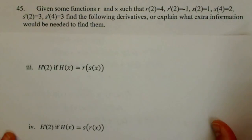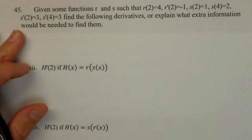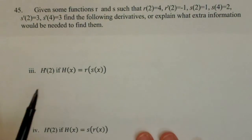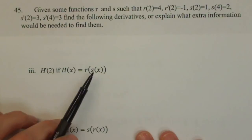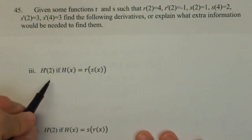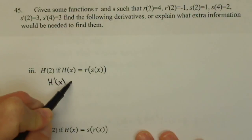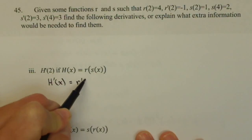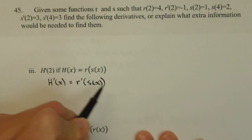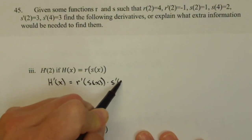We're going to do a couple more of these. So first off, what about H prime of two if H of x is given by r of s of x? Well, then H prime of x requires chain rule, which is derivative of the outside, r prime, leave the inside alone, times the derivative of the inside.